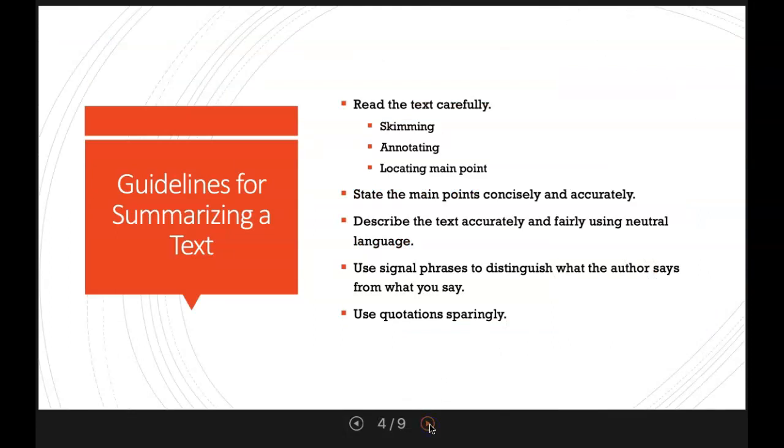Another guideline for summarizing a text is to read the text very carefully. You're skimming that article or newspaper or that essay. Whatever it is that you are reading, you're skimming it for general understanding. You're annotating, you're locating the main points. Then you want to try to state those main points of the piece concisely and accurately. If you can come up with what the main points were, then that also is going to help you understand that text.